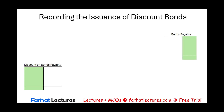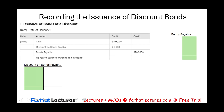Let's first record the issuance of this bond. How much cash did we receive? $195,000. We debit cash $195,000. The bonds payable is always recorded at face value, which is $200,000. Since we received $5,000 less than the face value — $5,000 less in cash — we create a new account called discount on bonds payable.